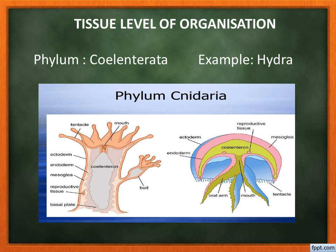Tissue level of organization: a group of cells performing a similar function is called a tissue. Here, organisms are made up of groups of cells (tissues) performing the same function — that is tissue level of organization. This is present in the second phylum, Coelenterata, which is a little more advanced than Porifera. Example: Hydra.